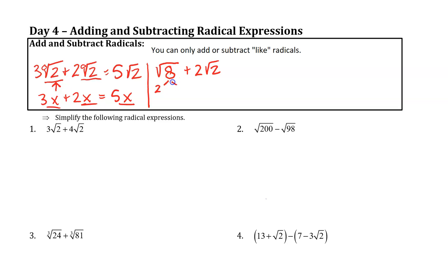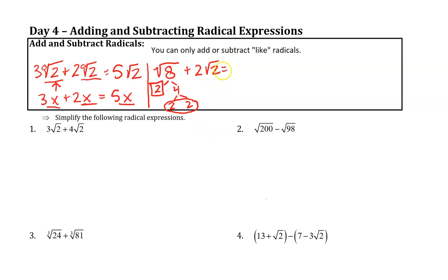Here we see the square root of 8. To simplify this radical, we'll get it factored. 8 factors into 2 and 4, and 4 is factored into 2 times 2. Here we see a pair of 2's. When we have a pair and this is a square root, I need a pair — they'll break out of the radical and leave the other 2 behind. So this simplifies to 2 radical 2 plus 2 more radical 2, which gives us 4 radical 2.